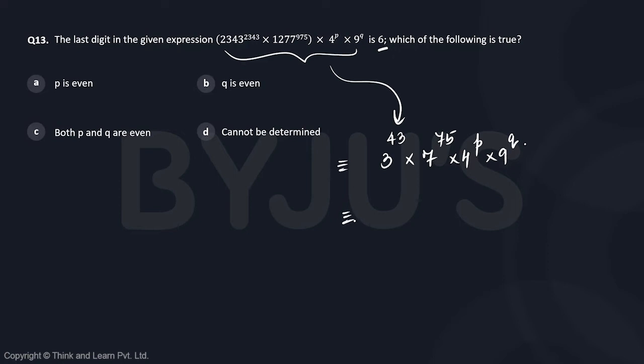Now, 3 raised to 43 is of the form 3 to the power 4k plus 3, and 7 raised to 75 is of the form 7 to the power 4k plus 3 again, times 4 to the power p times 9 to the power q.